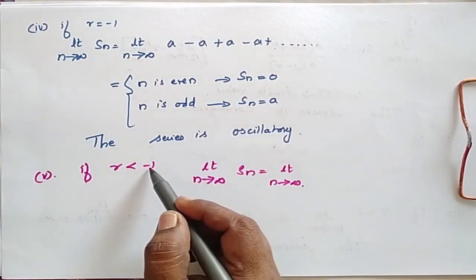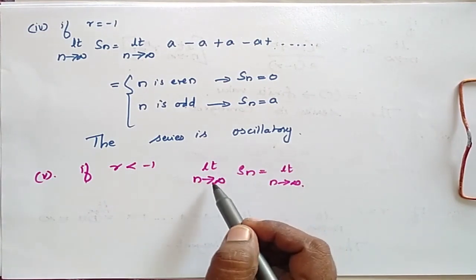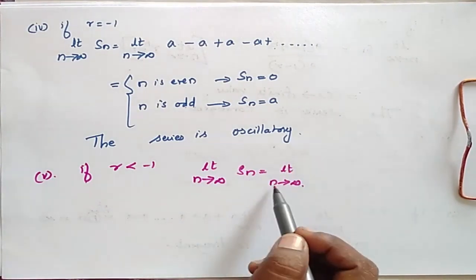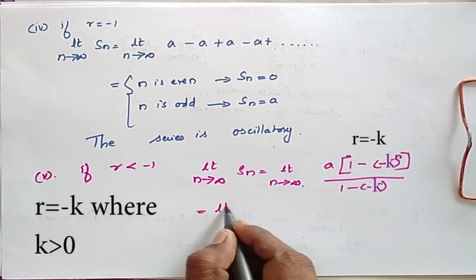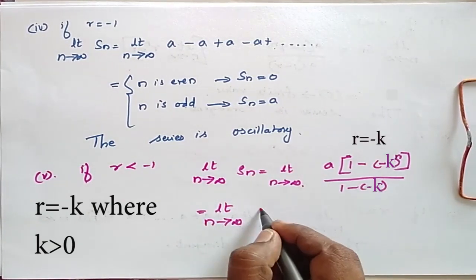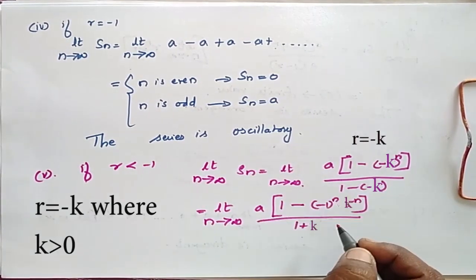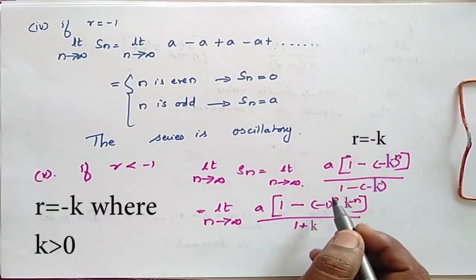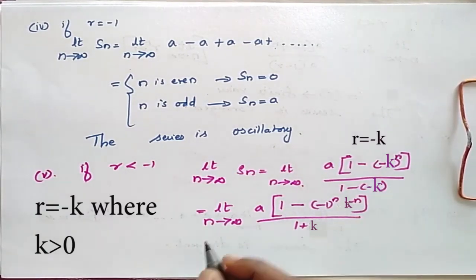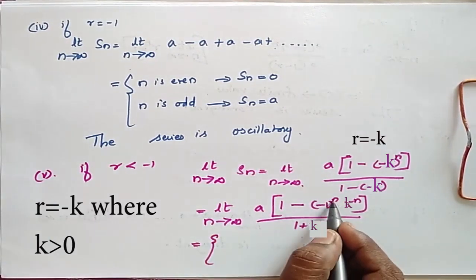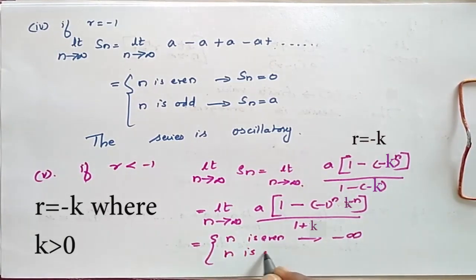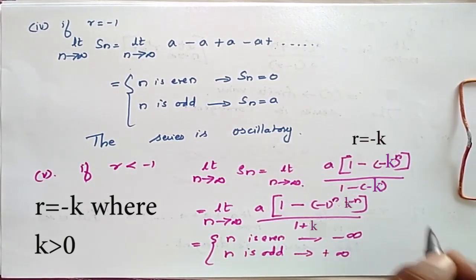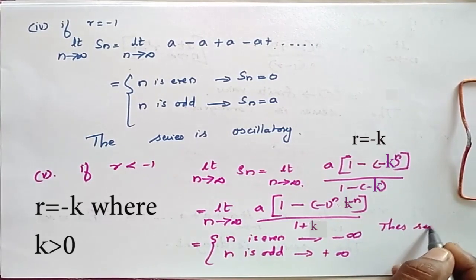If r is less than -1, the limit as n tends to infinity of S_n: when simplified and n → ∞, we come across two possibilities — when n is even we get minus infinity, and when n is odd we get plus infinity. So here also it does not tend to a unique limit, and the series is oscillatory.